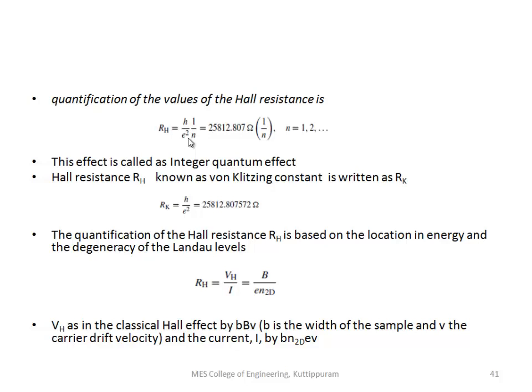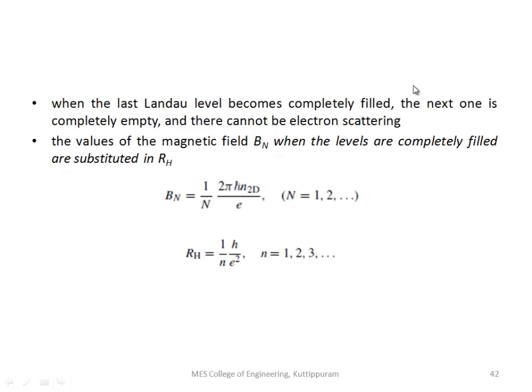That hall resistance in the quantized value depends on the Landau levels. When the last Landau level becomes completely filled, the next one is empty, and there cannot be electron scattering. The values of the magnetic field B_N when the levels are completely filled are substituted as B_N equals 1 by N times 2 pi h n2D by e.